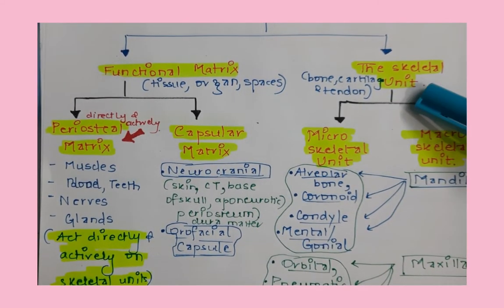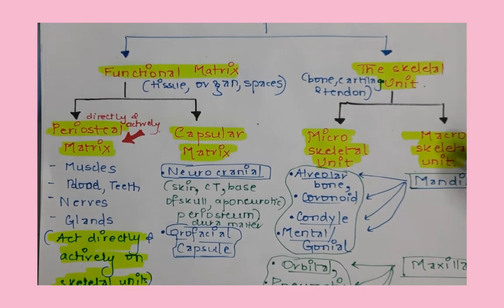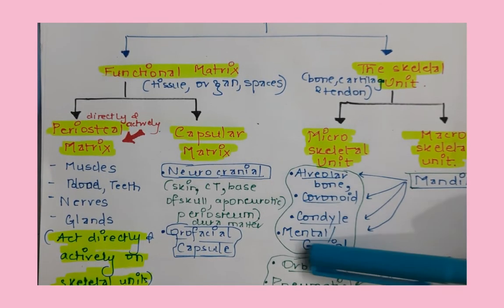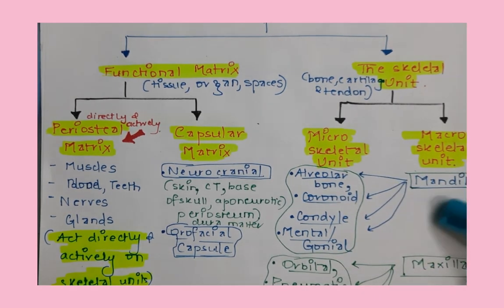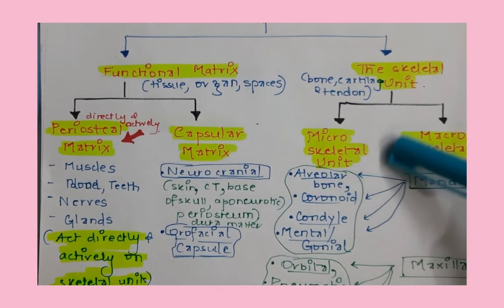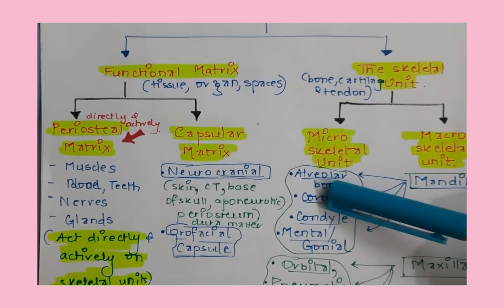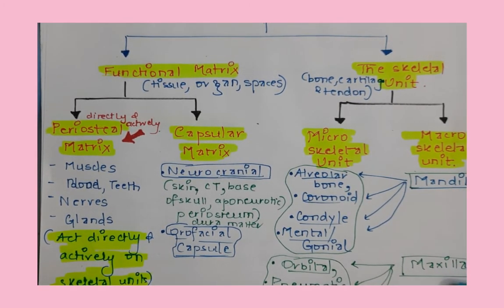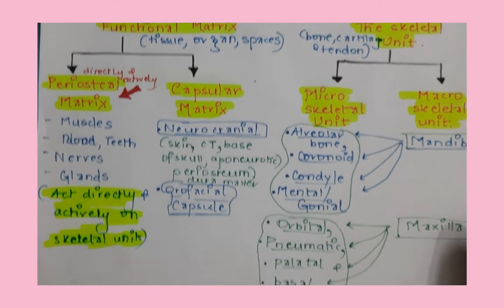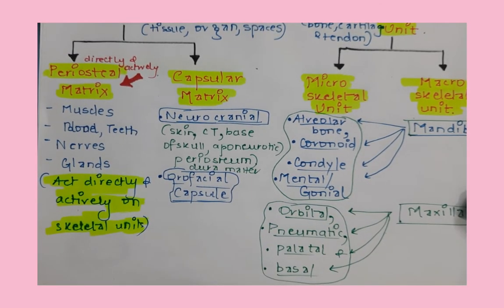The skeletal unit comprises microskeletal units and macroskeletal units. For the mandible, the microskeletal units — alveolar bone, coronoid, condyle, mentale, and gonial — all work together to form one macroskeletal unit, which is the mandible. Similarly, in the maxilla, the orbital, pneumatic, palatal, and basal bone are the microskeletal units that make up the macroskeletal unit that is the maxilla.